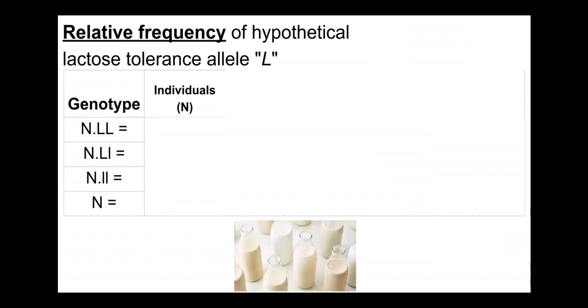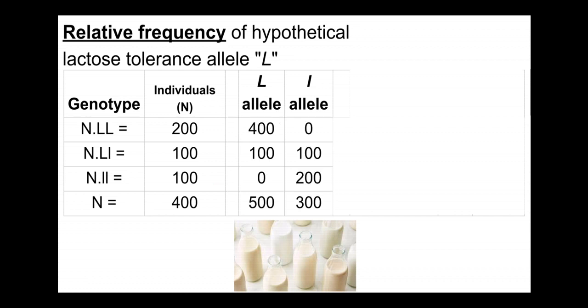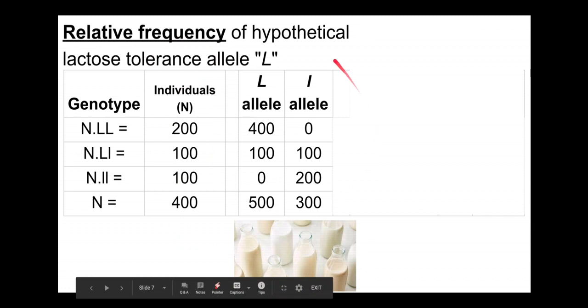So the allele frequencies here, it's worthwhile to walk through how we're going to lay this out again. This is similar to the previous presentation. We have 400 total individuals in our hypothetical population: 200 homozygous dominant, 100 heterozygous, and 100 homozygous recessive.